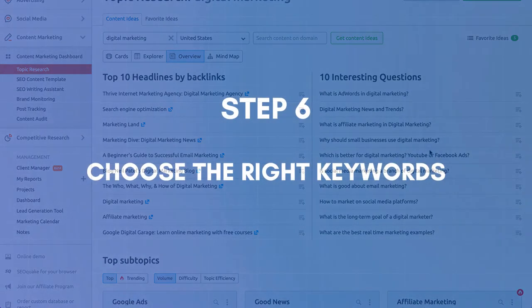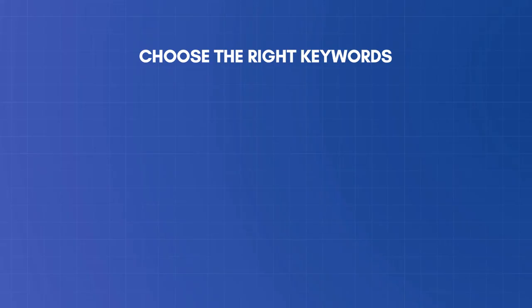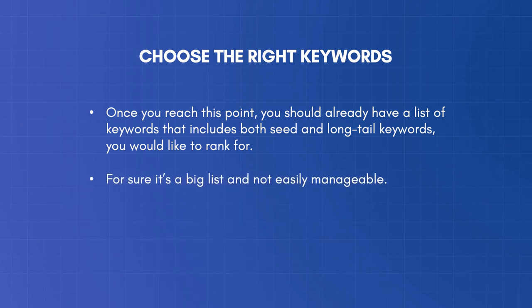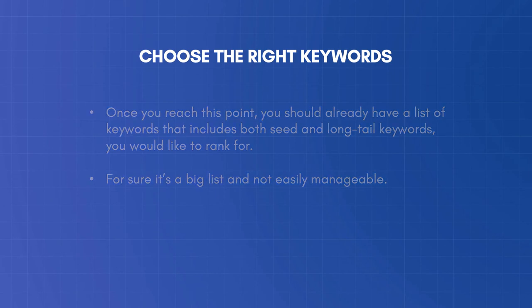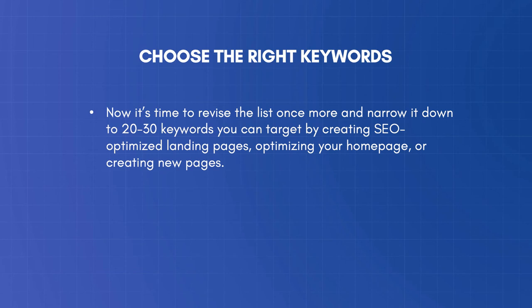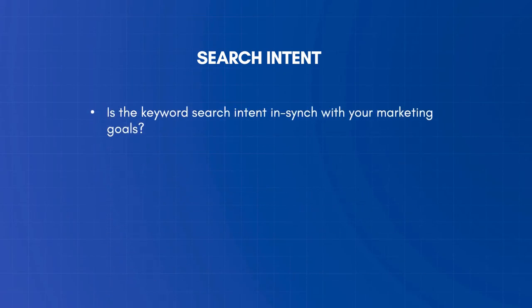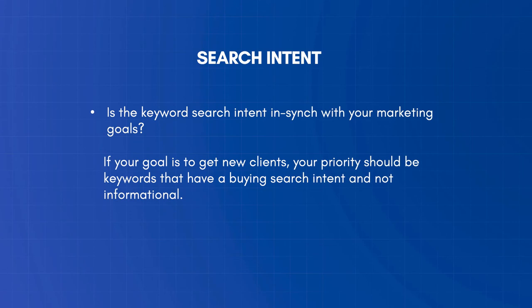Step 6: Choose the right keywords for your website. Once you reach this point, you should have a list of both seed and long-tail keywords. Now it's time to revise the list and narrow it down to 20 to 30 keywords you can target by creating SEO-optimized landing pages, optimizing your homepage, or creating new pages. Go through the keywords one by one and ask yourself: Is the keyword search intent in sync with your marketing goals? If your goal is to get new clients, prioritize keywords with a buying search intent, not informational.